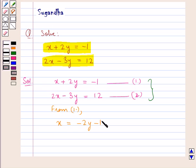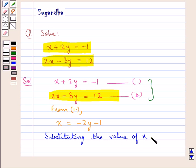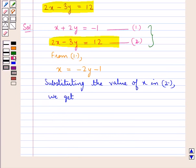Now, this value of x would be substituted for x in the second equation. Substituting the value of x in equation 2, we get 2 into minus 2y minus 1 minus 3y is equal to 12.